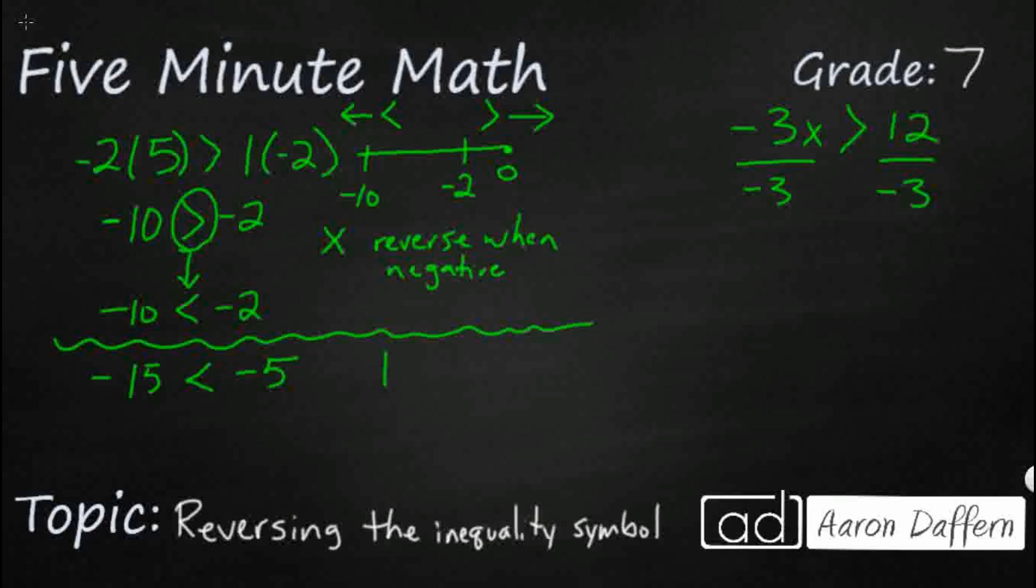So negative 15, let's make sure we see that and we understand that. There's my 0. There's my negative 5. There's my negative 15. So negative 15 is less than negative 5. It's farther away from 0. So let's just divide both of these.